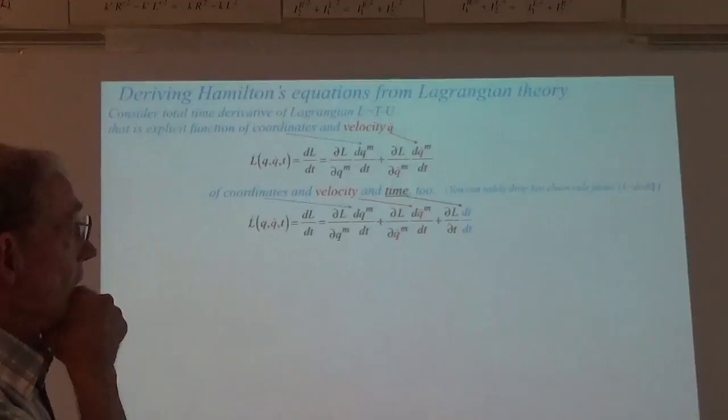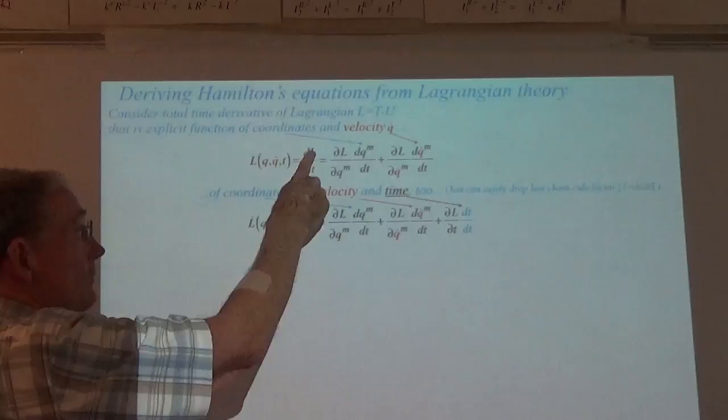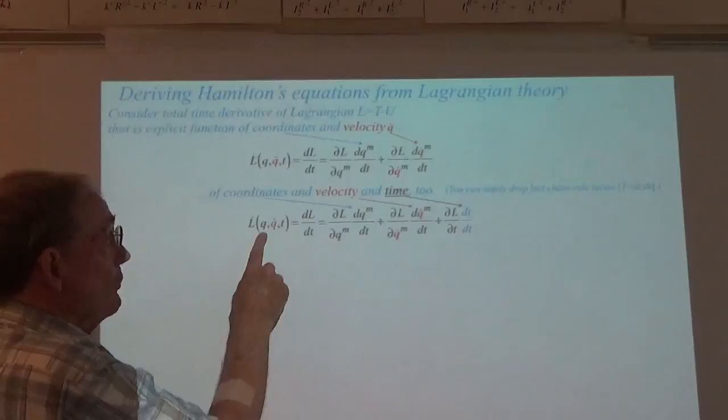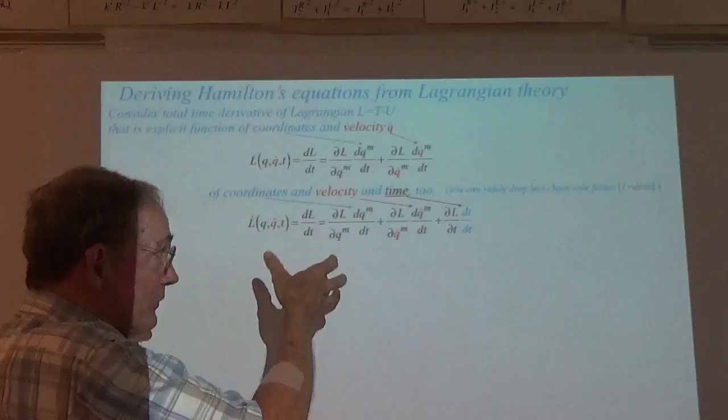The total time derivative of the Lagrangian: if it's not an explicit function of time, then all of its changes are due to the variables — coordinates or velocities changing. But if you've got somebody tinkering with this thing, you've got a field in there that you're turning the knobs on, you definitely need to add that.